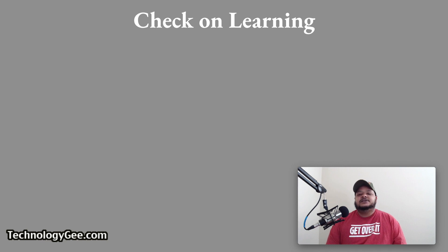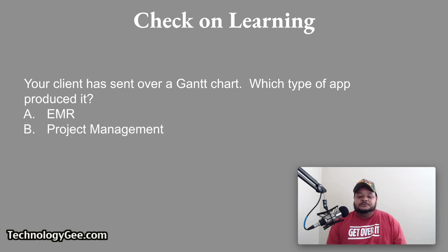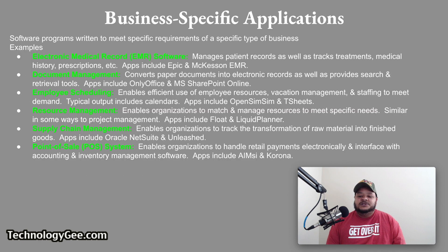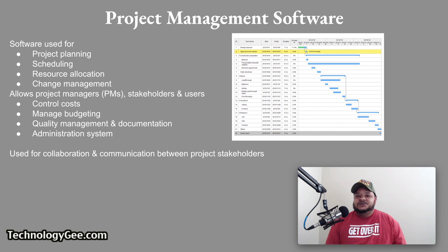Check on learning — Question 1: Your client has sent over a Gantt chart. Which type of app produced it? The options are EMR, project management, accounting, or employee scheduling. The correct answer is project management. A Gantt chart allows you to set dates and milestones of various tasks that need to be completed in order for your organization to meet certain deadlines or to complete a project in its totality.